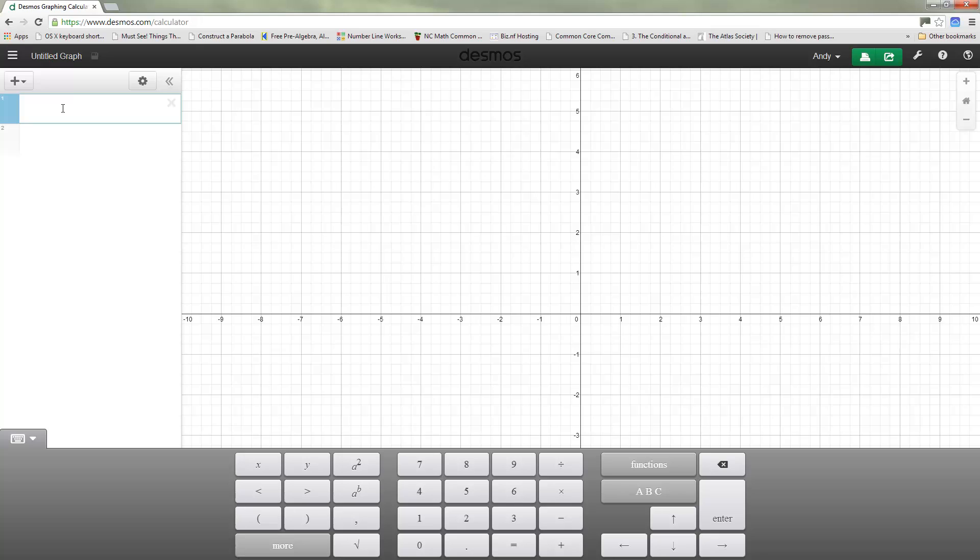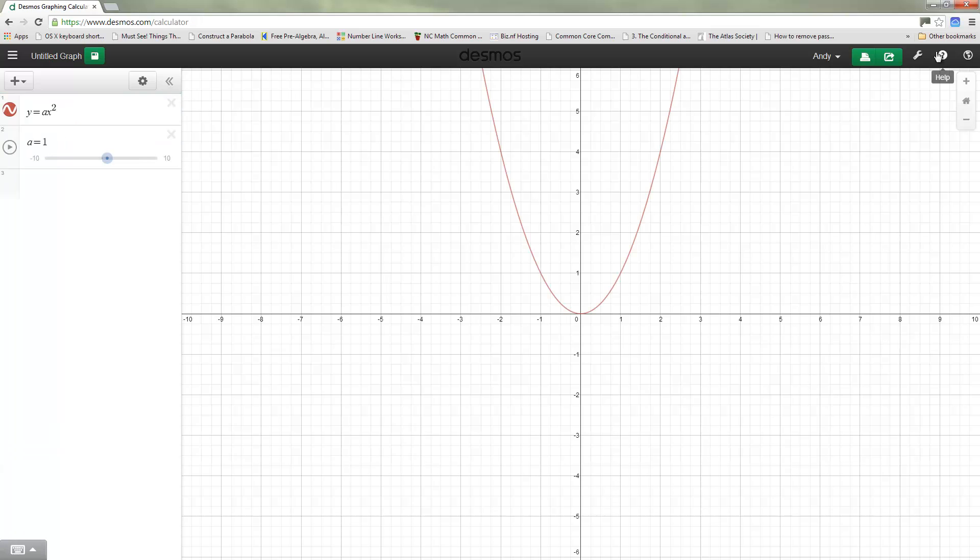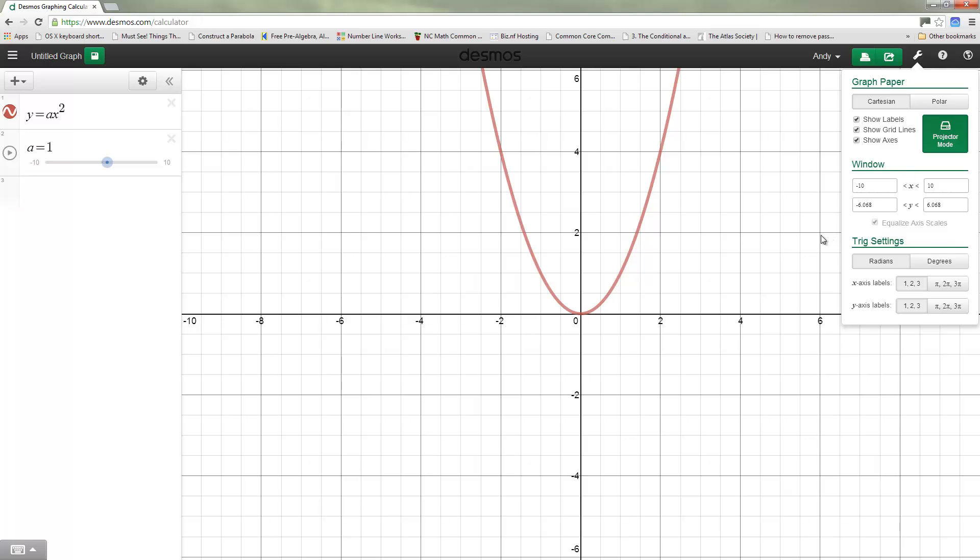The first thing I started you out with was y equals ax squared and we added a slider for a. Let me make this a little bit thicker with projector mode.